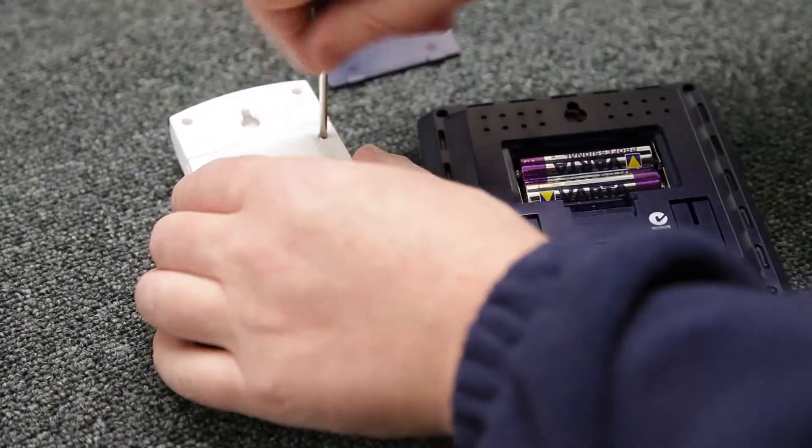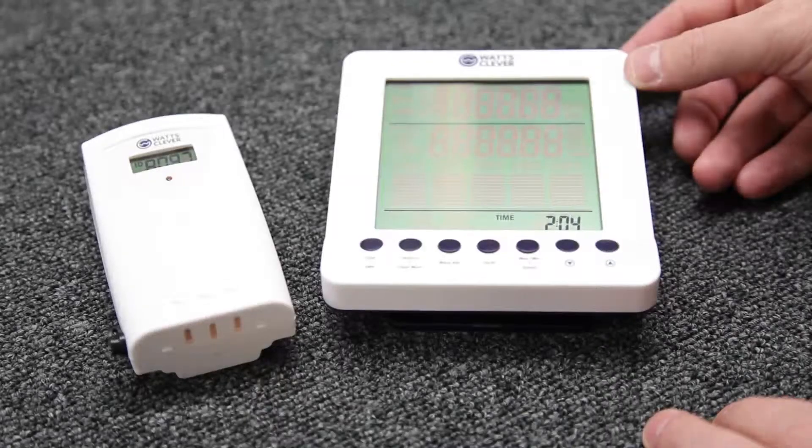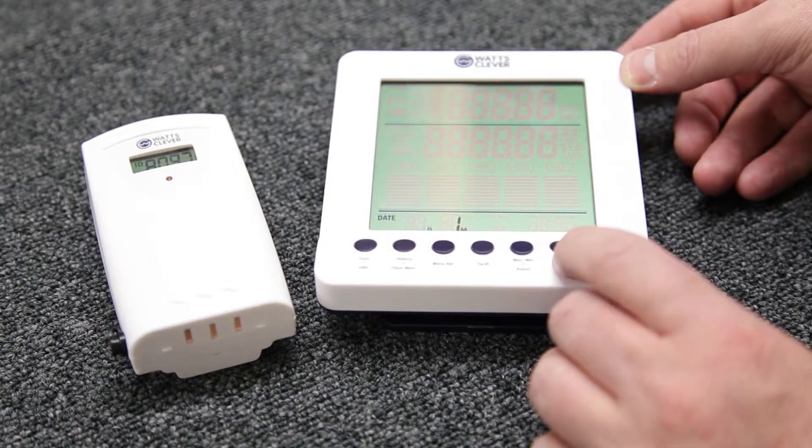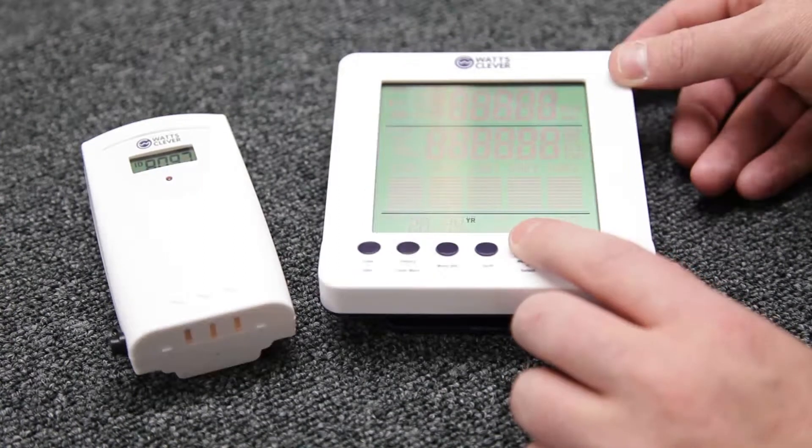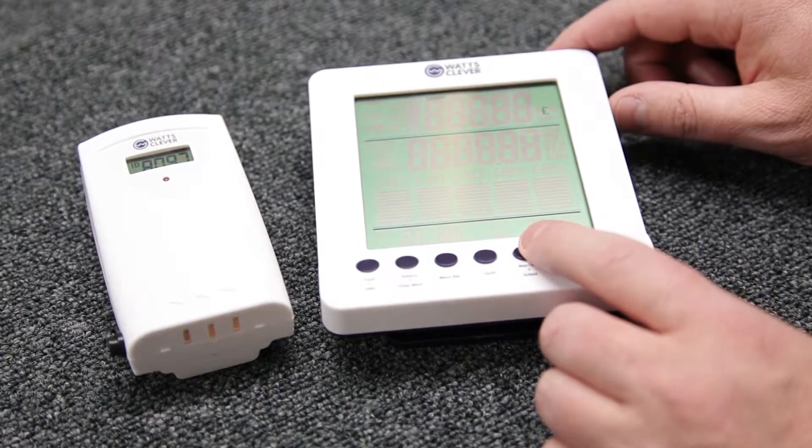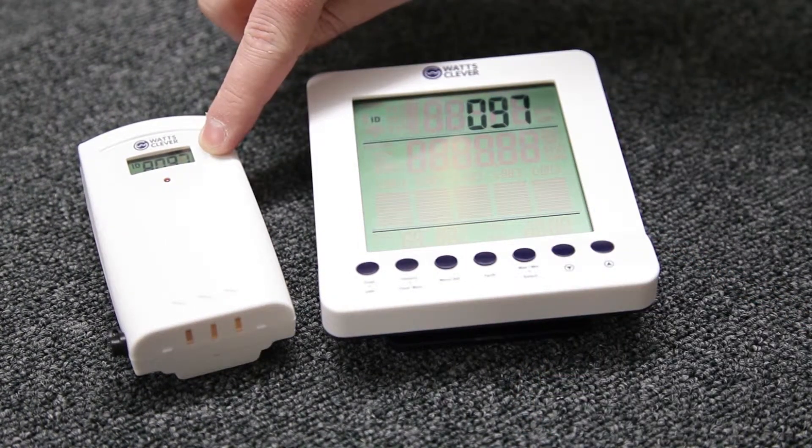We can now configure the receiver to correlate with the transmitter. To do this you need to set the time, the date, the year, your currency, and then pair the two devices using the ID number on the transmitter.